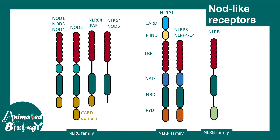In order to understand the overall inflammasome, we have to understand NOD-like receptors, which are actually components of the inflammasome. There are different subcategories of NOD-like receptors. These are pattern recognition receptors — innate immune receptors. All of them have one thing in common: the leucine-rich repeat, represented here in red.